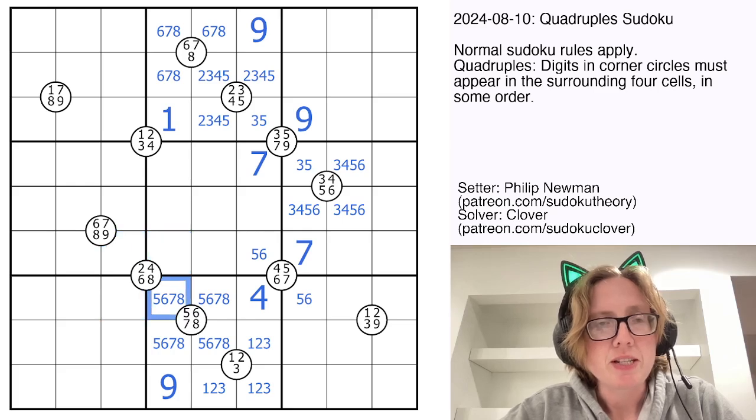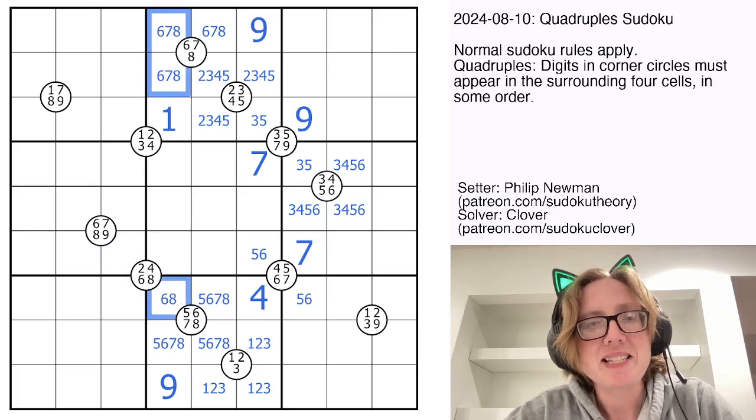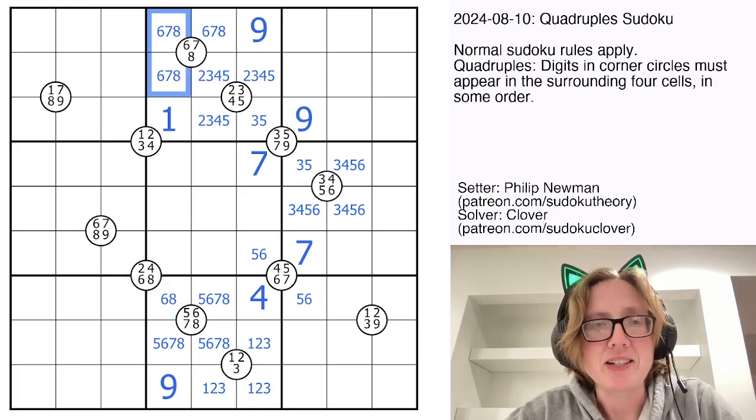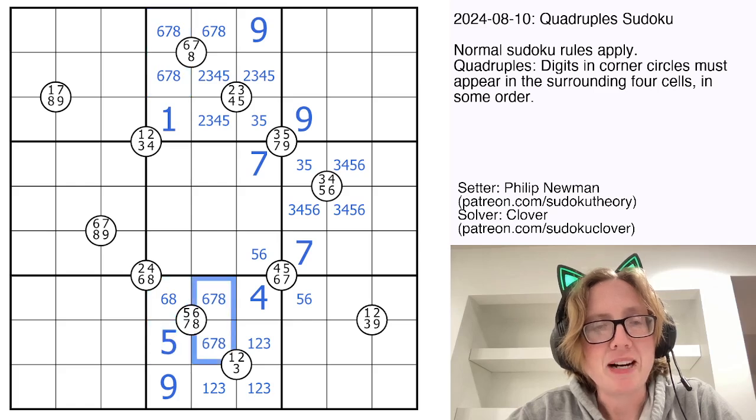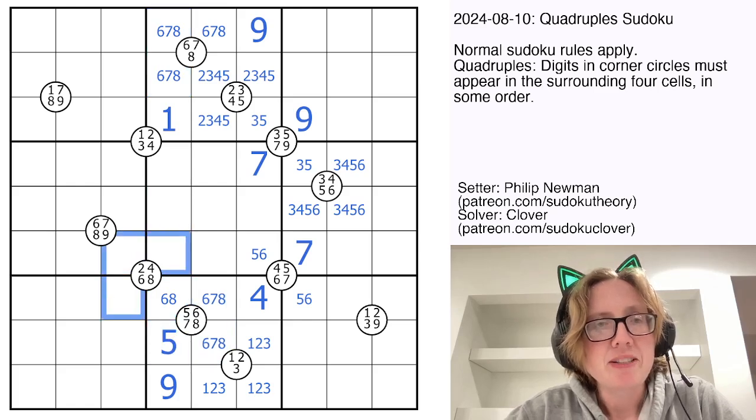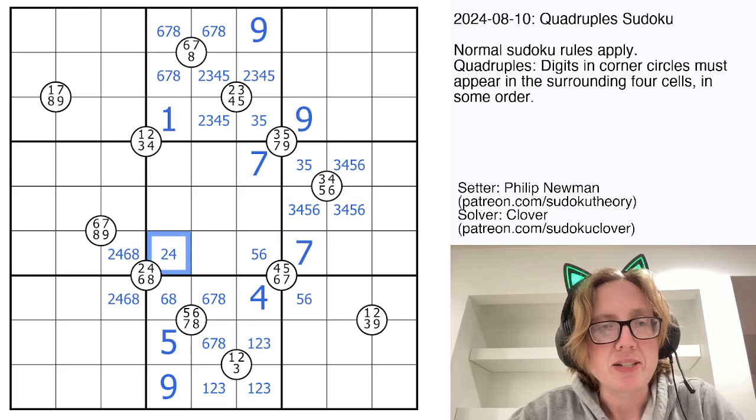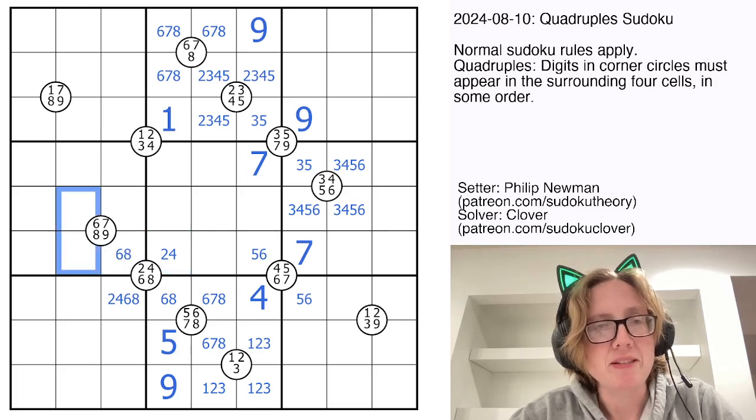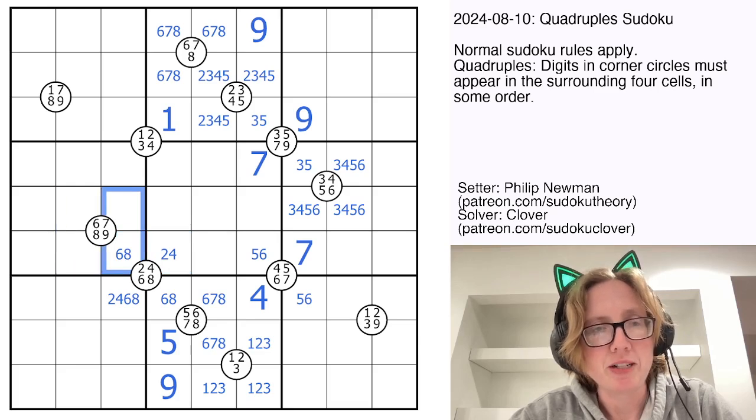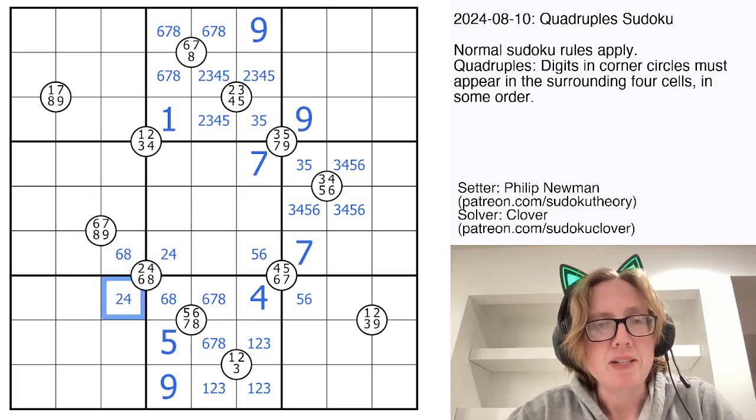This two, four, six, eight quadruple tells us that this digit is either six or eight, and that's kind of fun because we now have a six, seven, eight triple going vertically in column four. That makes this a five. Now we can mark these as two, four, six, and eight, and because of that six, seven, eight triple, this definitely isn't going to be a six or an eight. This won't be a two or a four because of the six, seven, eight, nine quadruple here, and so this also won't be a six or an eight because we have this six, eight pair at this point.